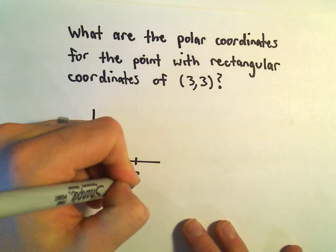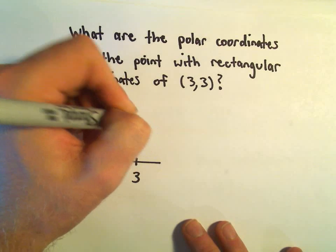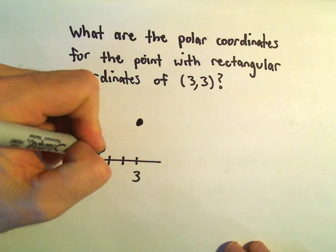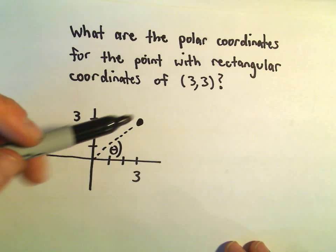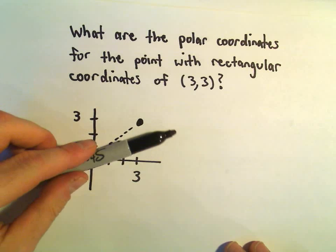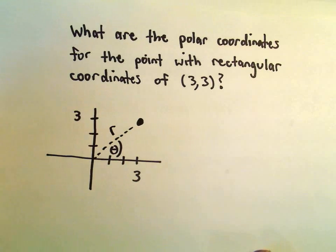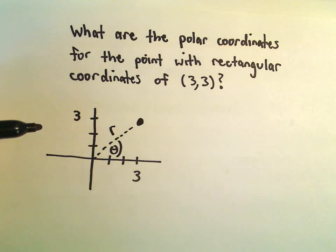So, we just move 3 units to the right, 3 units up. That's our good old regular rectangular coordinates. We'll have to figure out two things. We'll have to figure out the angle that's made by the positive x-axis in that point, and we'll also have to figure out our r value. Both of these are pretty straightforward to figure out, though.